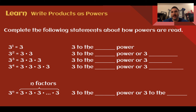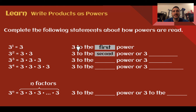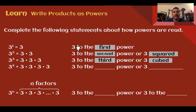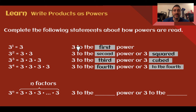Complete the following statements about how powers are read. If we have a 1 as an exponent, we read it as 3 to the 1st power. If we have a 2 as an exponent — so 3 times 3 — we can read it as 3 to the 2nd power, or more commonly 3 squared. If we have 3 to the 3rd power, we might read it as 3 cubed. For 3 to the 4th power and anything 4 or larger, we just say the number — so 3 to the 4th, where we drop the word power at the end. If it was 3 with an exponent of 9, we would say 3 to the 9th.